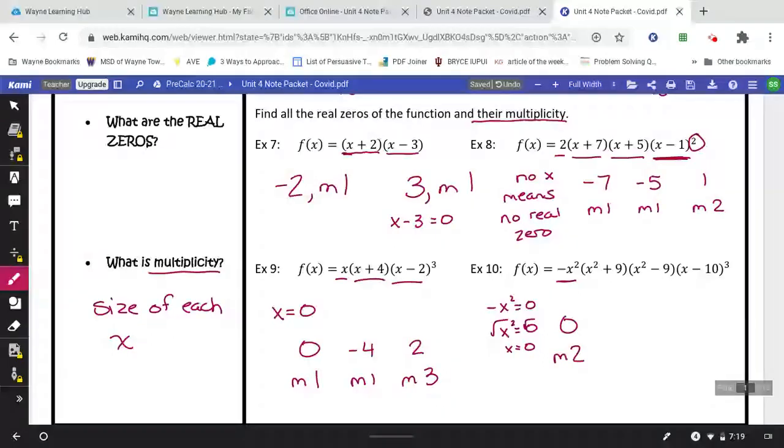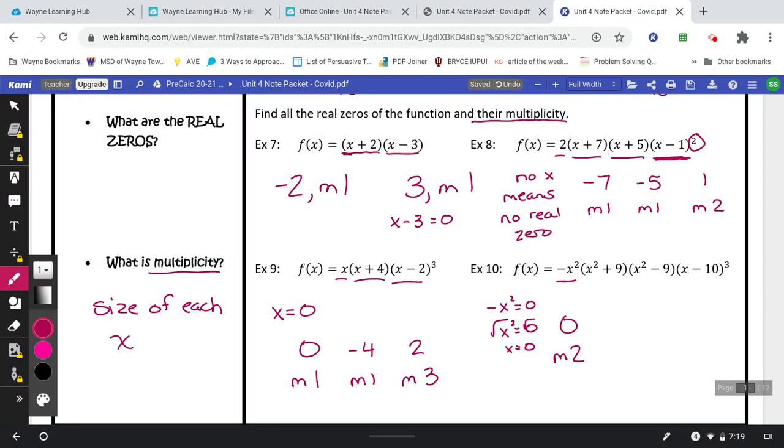Now we have a couple things that are squared. The squared ones, you always want to make sure you write out. So for x squared plus 9, subtract 9 from both sides and we square root it. We learned last chapter that you cannot square root a negative. So no real zeros. And I especially like the word real here because real means not imaginary. And if you remember back to algebra 2, you can actually take the square root of negatives if you start using imaginary numbers. We'll get to that a little bit later.